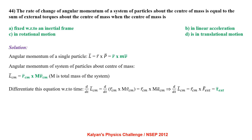The rate of change of angular momentum of a system of particles about the centre of mass equals the sum of external torques about the centre of mass. Angular momentum of a single particle: L = R × P = R × mv. Angular momentum about CM: L_CM = R_CM × M × V_CM. Differentiating: dL_CM/dt = R_CM × M × a_CM = τ_external. So all options are correct.